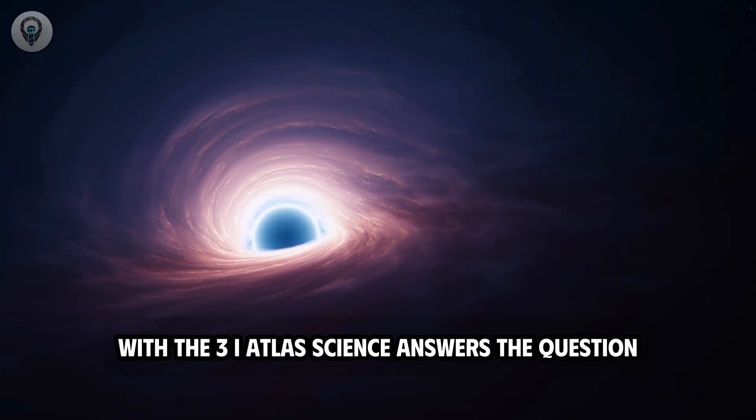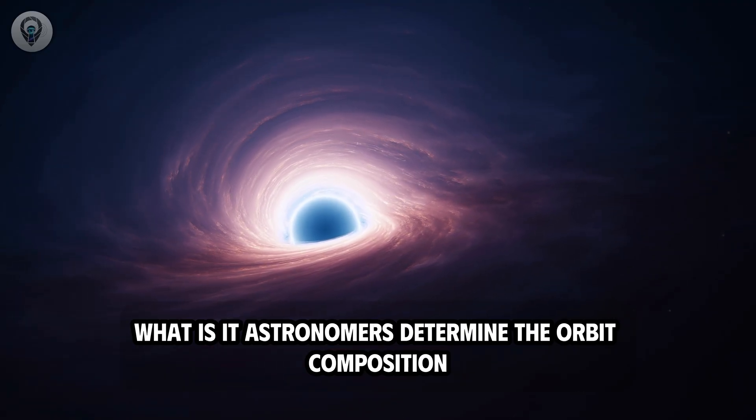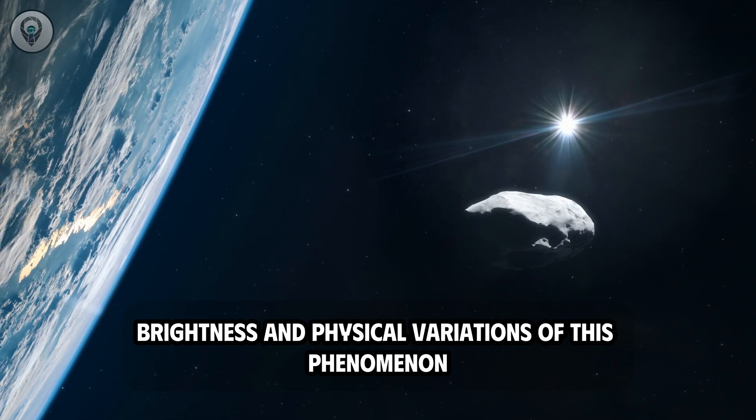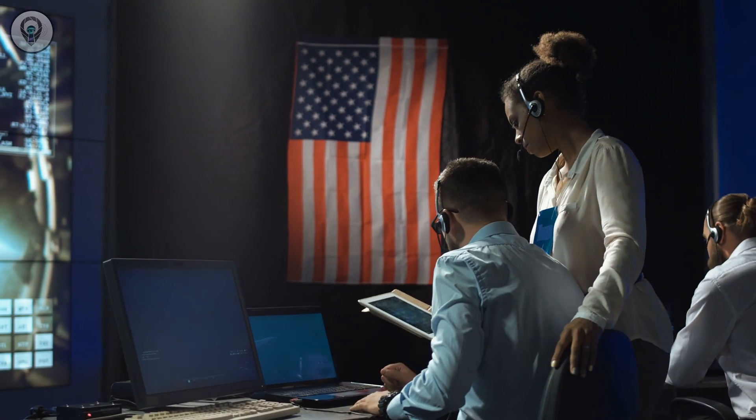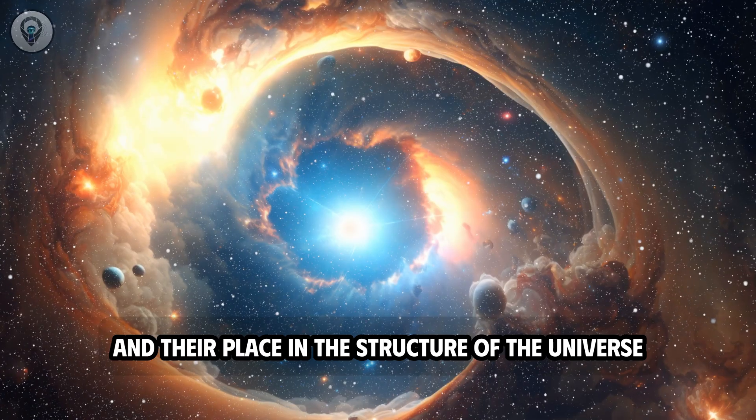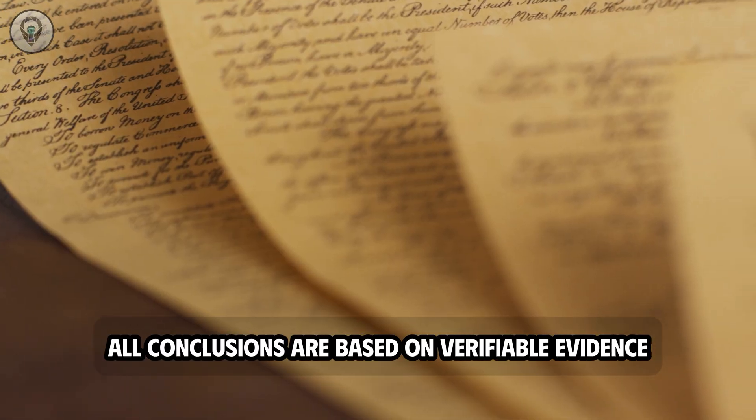With the 3i Atlas, science answers the question: what is it? Astronomers determine the orbit, composition, brightness, and physical variations of this phenomenon based on observations and computational models. This data allows us to better understand the nature of comets and their place in the structure of the universe. At this level, all conclusions are based on verifiable evidence.